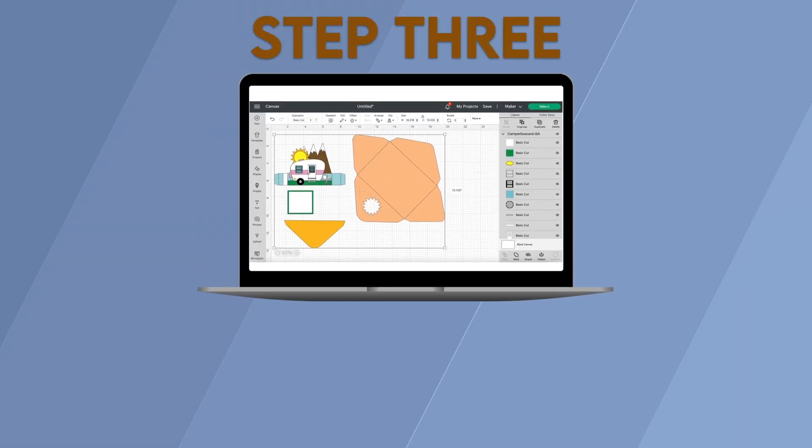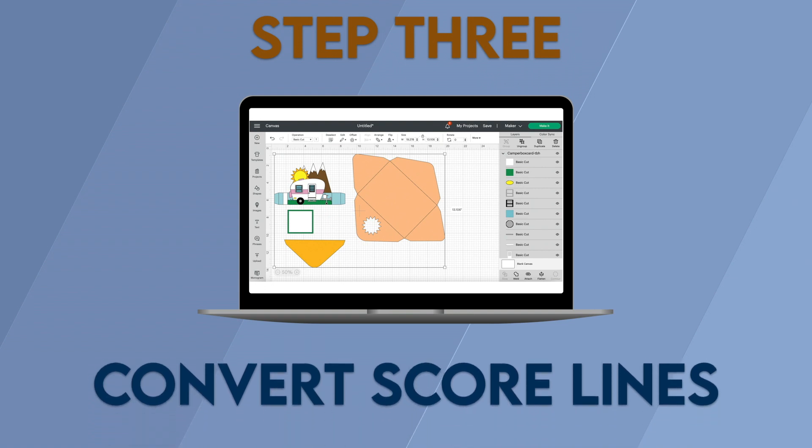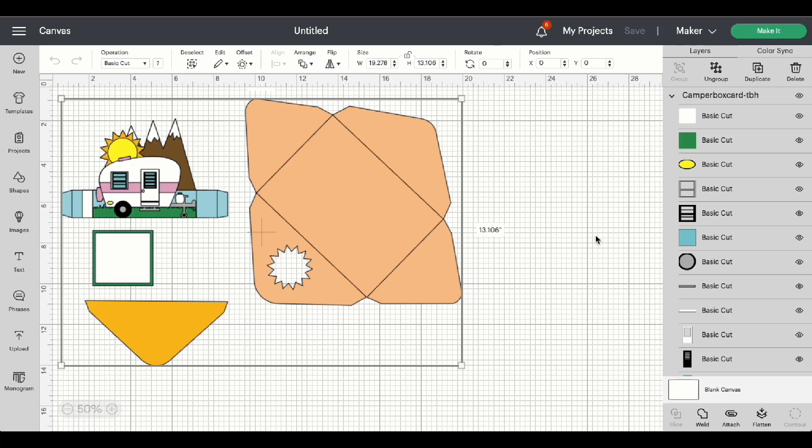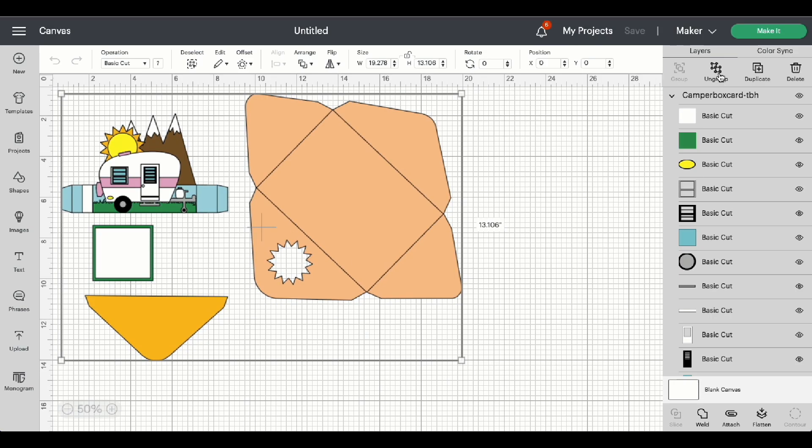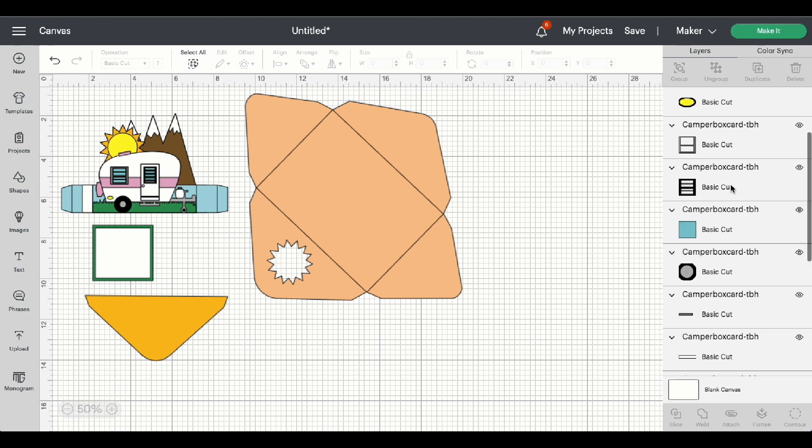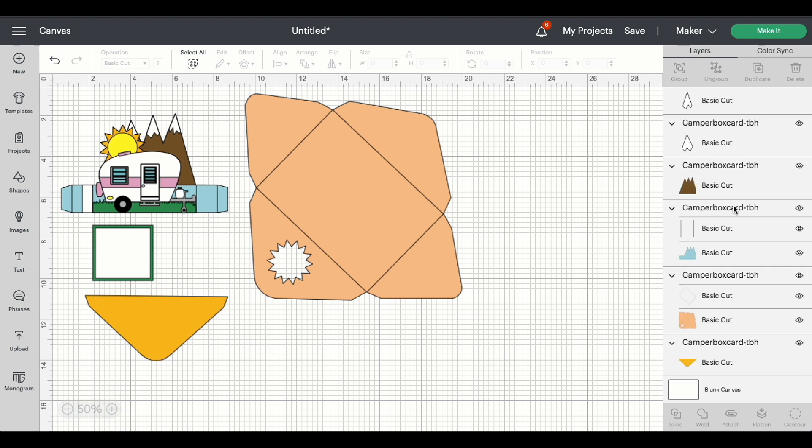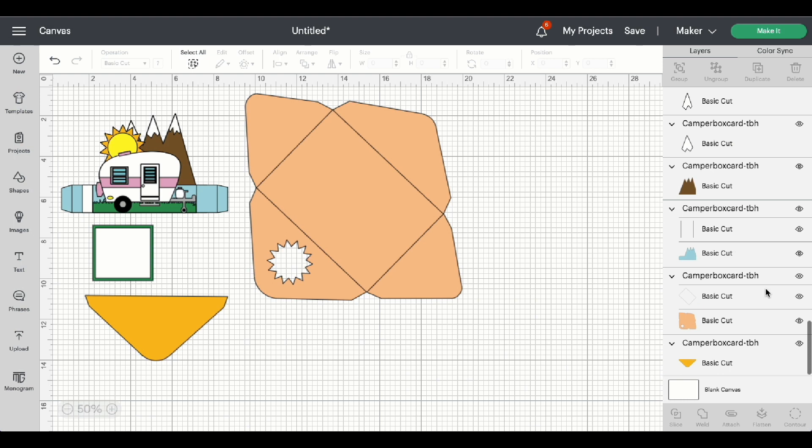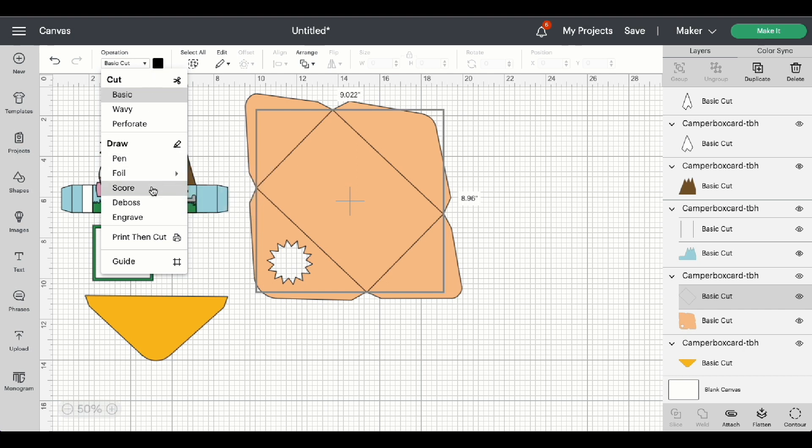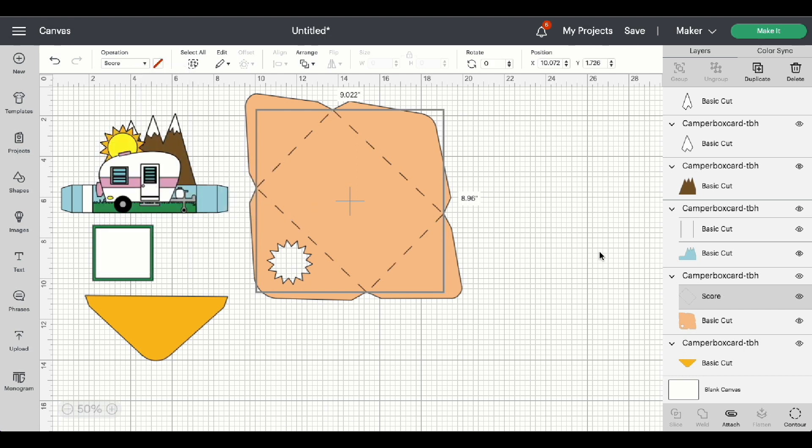Step 3. Convert scorelines. Now that the file has been brought onto our canvas, we can go ahead and ungroup the design. Scroll down the Layers panel because we have a few scorelines that we need to convert. Let's start with the envelope. Highlight the scoreline. Come up to the Operation menu and change that to score. Highlight the group, and attach.